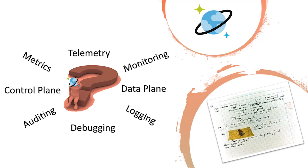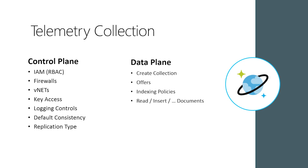Telemetry is really about two things: what is collected and where it is collected. We have two ways of thinking about this: control plane and data plane. Control plane operations are the meta operations — things that happen about the database but not the data itself, like setting a firewall or a VNet. The data plane is about things you're doing to the data. SQL people would think of these as DML and DDL — data manipulation and data definition.